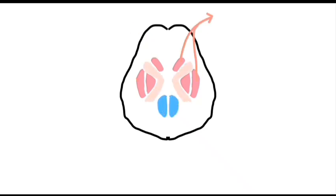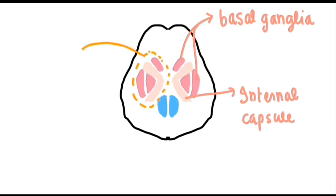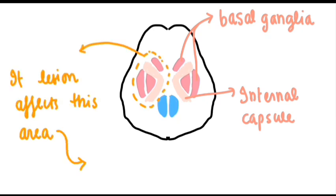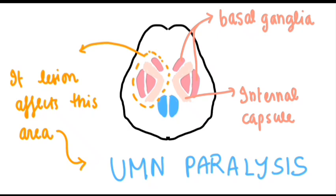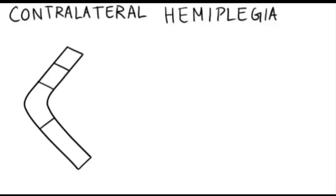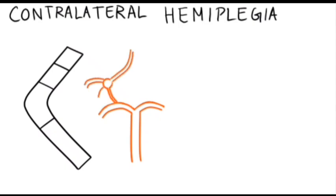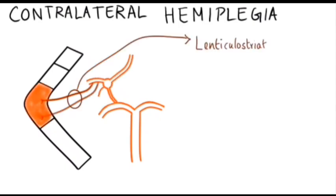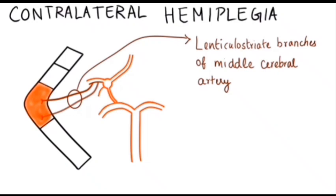Fibers coming from different parts of the cortex pass through the posterior limb of the internal capsule. Any disease of the internal capsule results in complete interruption of the corticospinal fibers, leading to paralysis of the opposite half of the body, which is known as contralateral hemiplegia. Interruption of blood flow in the lenticulostriate branches of the middle cerebral artery is the main cause for lesions of the internal capsule.